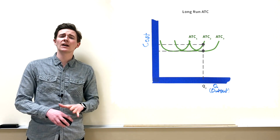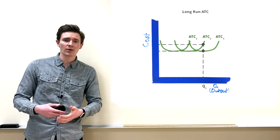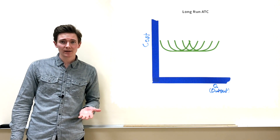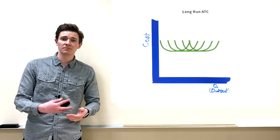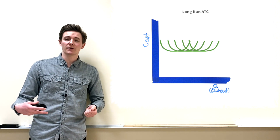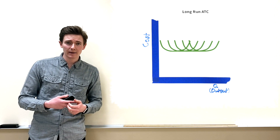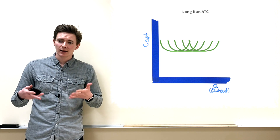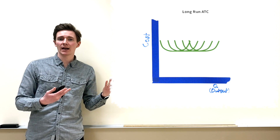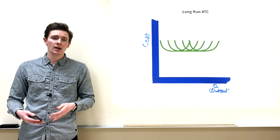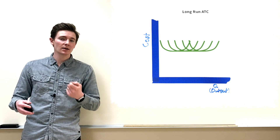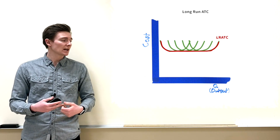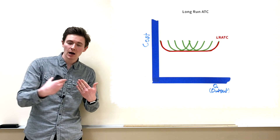In reality, there are many possible factory sizes, producing many ATC curves. The long-run average total cost curve represents producing at your most efficient point given you could pick any factory size at any output. It's like the envelope of all those ATC curve minimums, and it looks like a smooth curve formed by connecting the most efficient points of each short-run ATC.